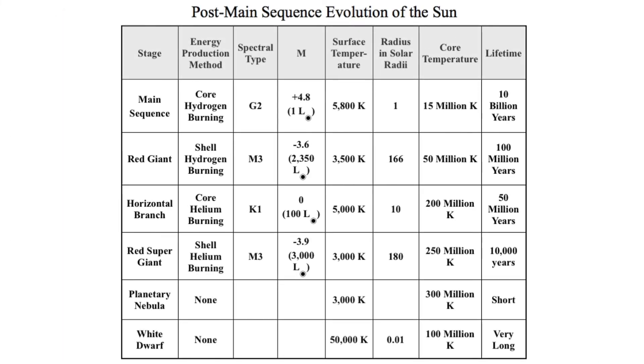I will leave you with this final image, a table summarizing the stages of post-main sequence evolution for the sun and stars like the sun. You can find information about the energy production, spectral type, mass, surface temperatures, physical size, core temperatures, and expected lifetimes for each of these stages in their respective columns. Pause the video to examine this table to your heart's content, or just move on to the next one and come back to this later. It's completely up to you.